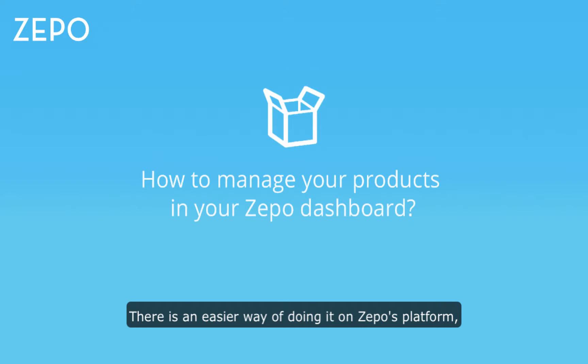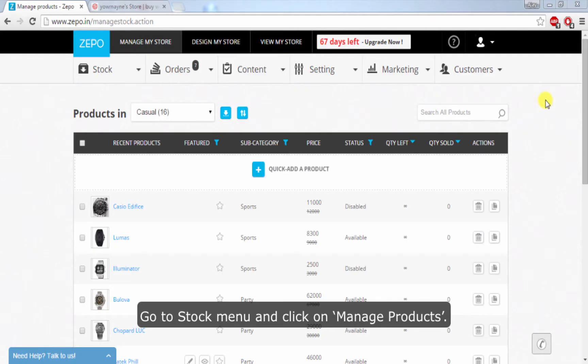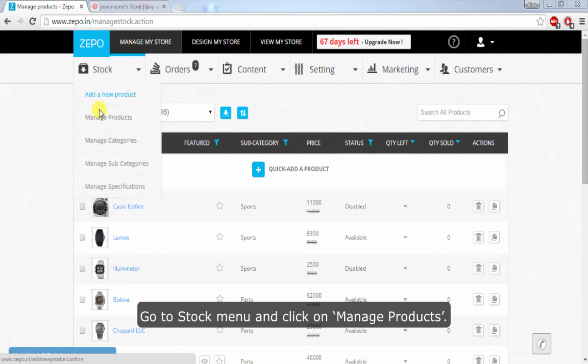There is an easier way of doing it on the Zappos platform using the Manage Products option. Go to the Stock menu and click on Manage Products.